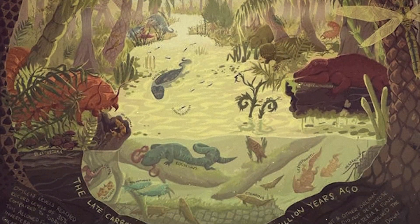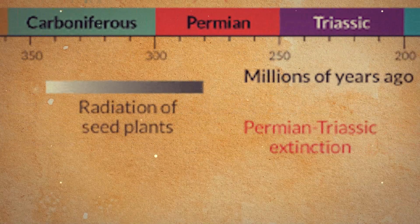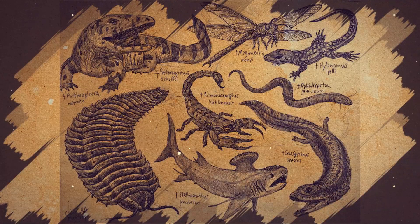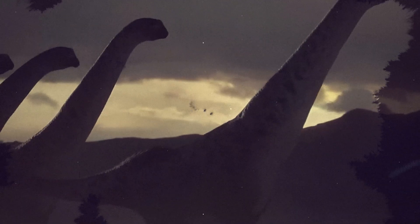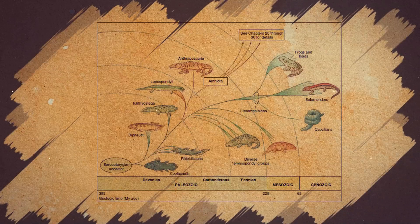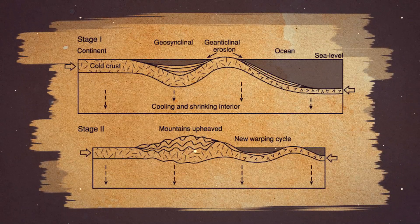The Carboniferous Period, spanning from approximately 359 to 299 million years ago, marks a pivotal era in Earth's geological and biological history. This epoch predated the age of the dinosaurs by about 60 million years, and it set the stage for the evolution of life as we know it. It also played a crucial role in shaping our planet's resources and ecosystems.